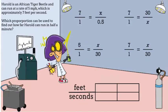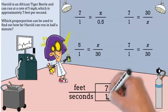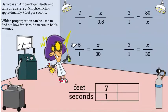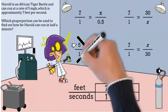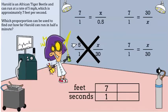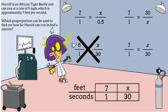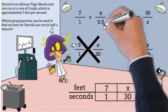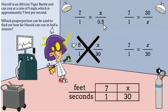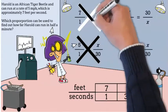Yes, Harold — one of the answer choices uses the five. We can eliminate that. Now, the question asks how far Harold can run in half a minute. A minute is 60 seconds, so half a minute is 30 seconds. Yes, Harold — the answer choice that uses 0.5 is just trying to trick people. Let's eliminate it.